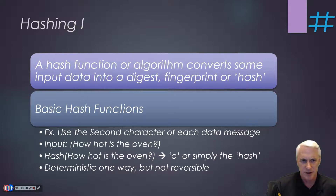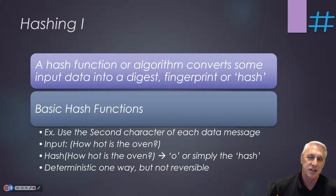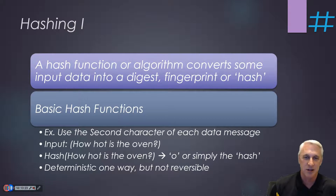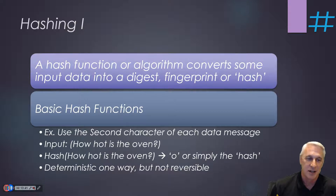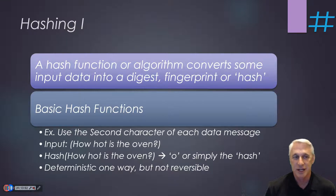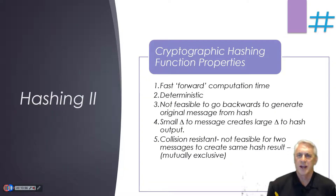For example, if the input is text like 'How hot is the oven?' a simple hash could be taking the second character of each data message — just the 'O' in 'how,' so 'O' would represent the hash. It is deterministic and one-way, not reversible. However, I could just as likely have said I want the character where 'hot' starts — also yielding 'O.' That's not unique, which is where this would break down and a basic hash function wouldn't work.